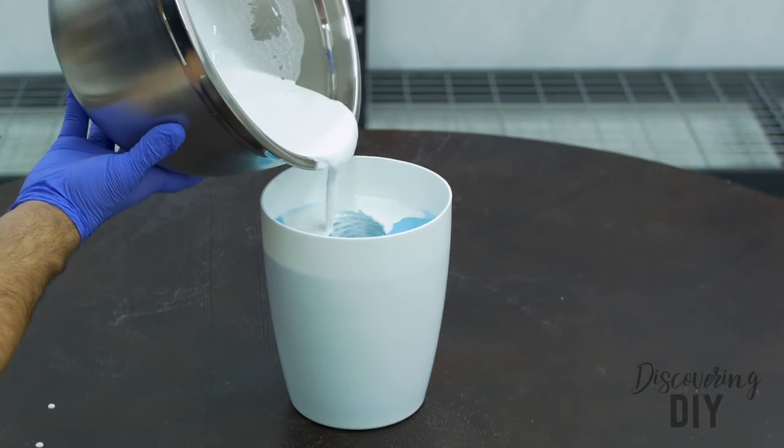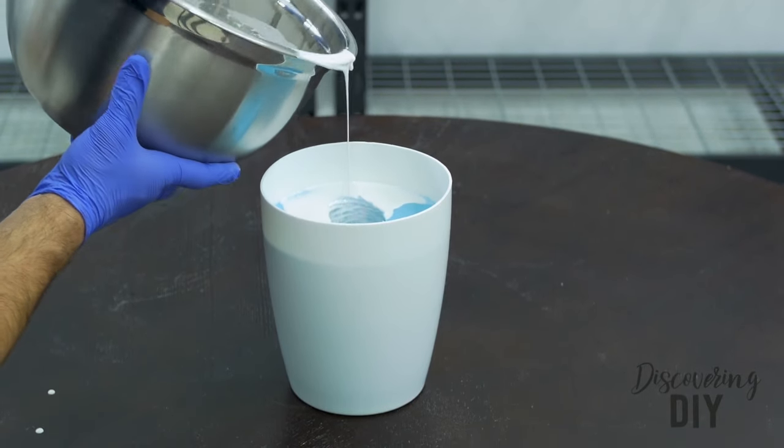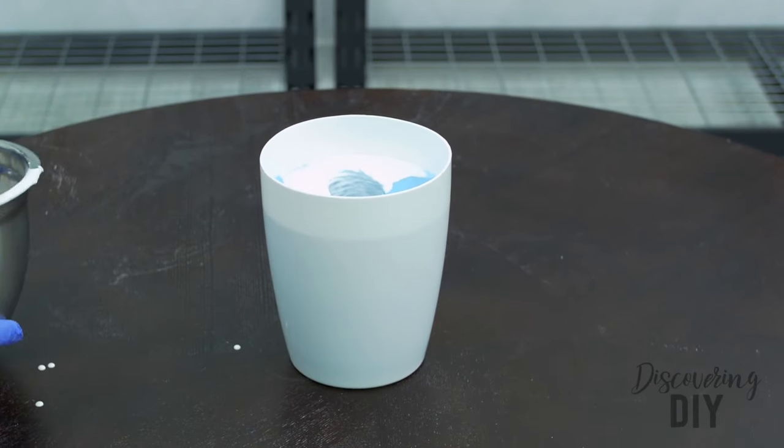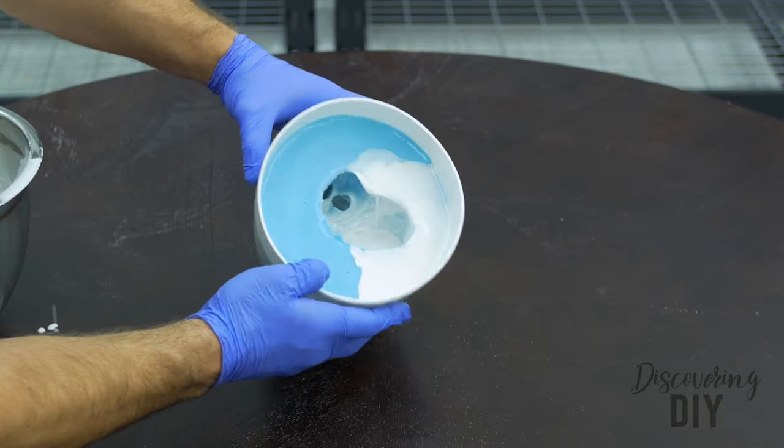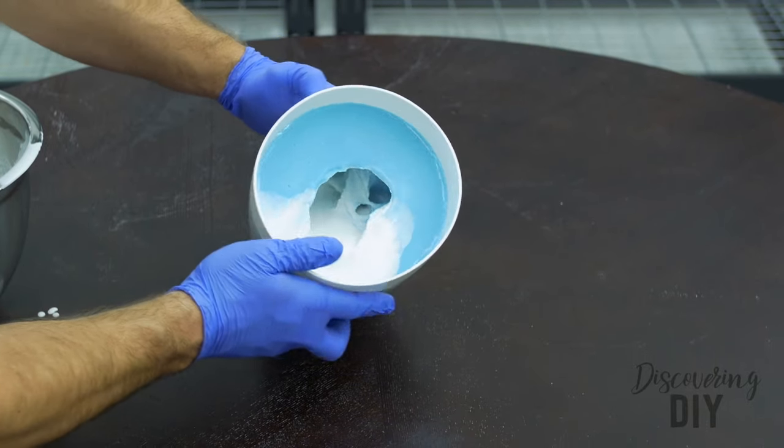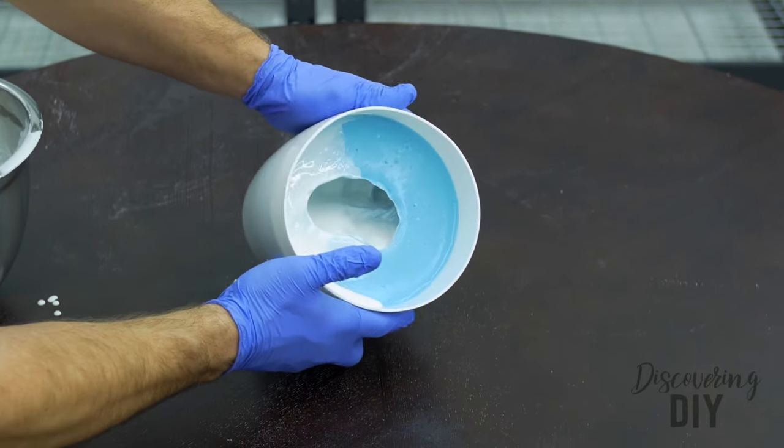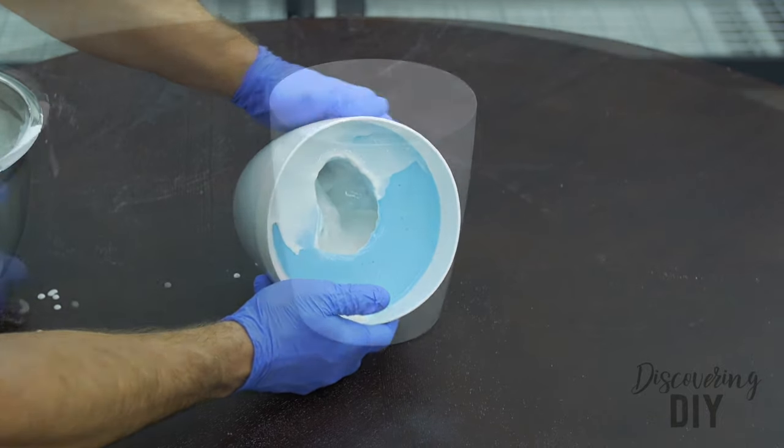After mixing, quickly pour casting material into the mold until the mold is half full of casting material. And then tilt the mold and rotate it in all directions, allowing the casting material to coat all areas inside the mold and fill any small areas.